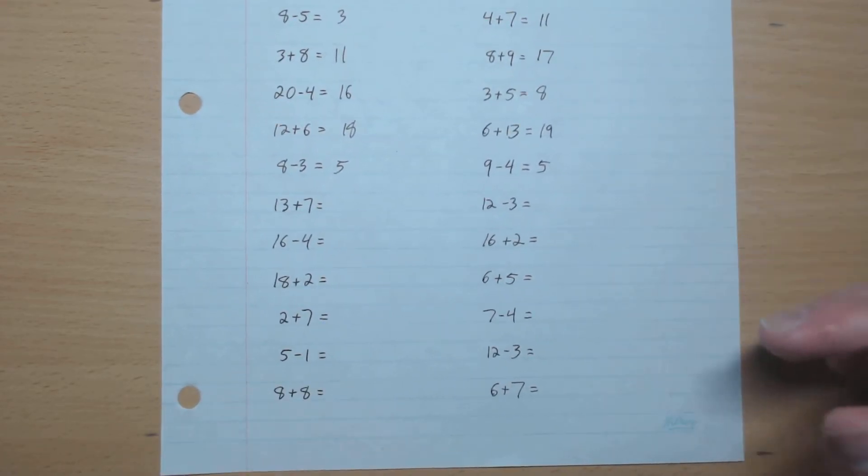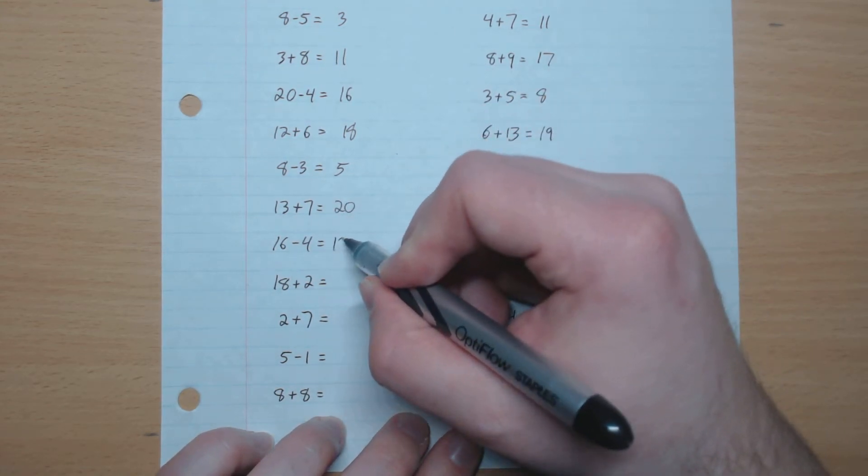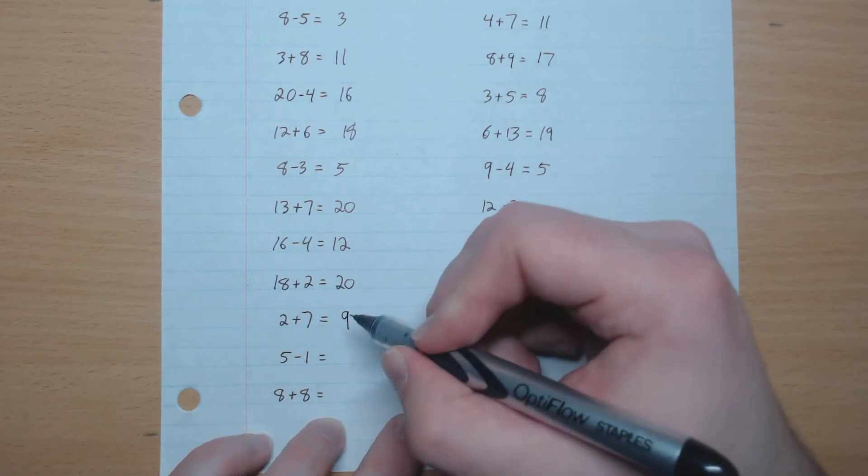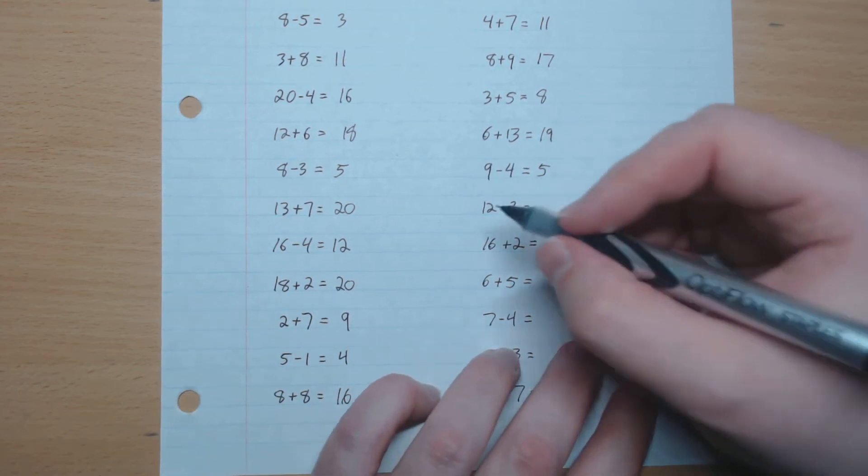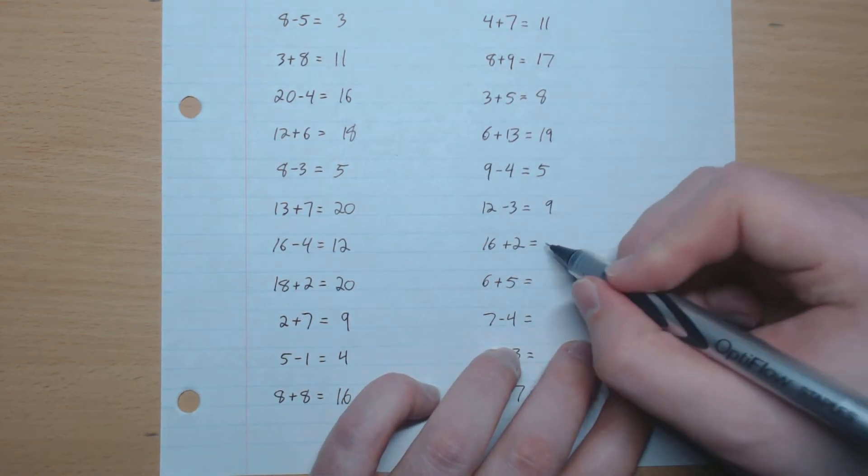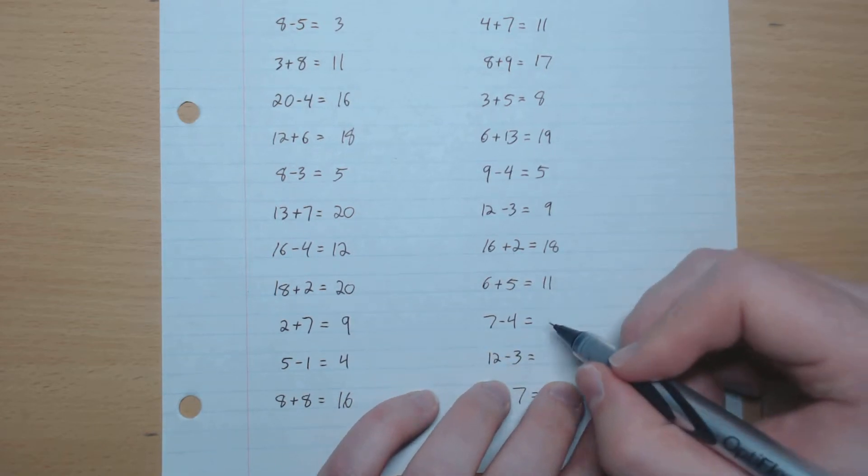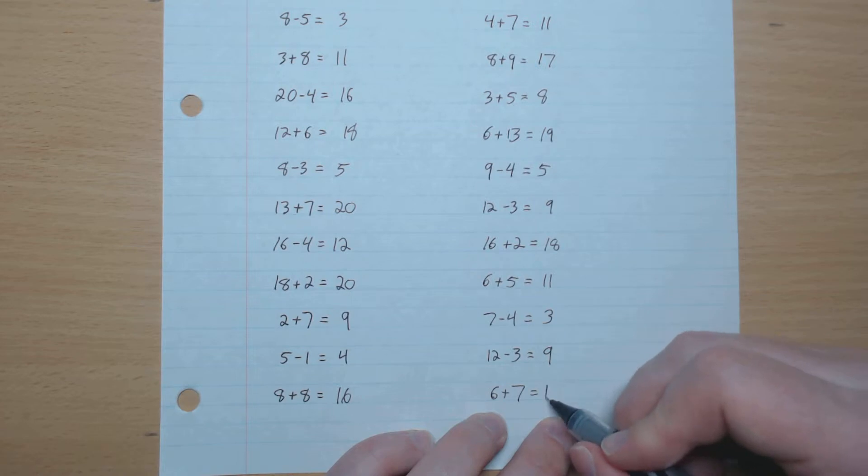Now let's do the bottom half: 20, 12, 20, 9, 4, 16, 9, 18, 11, 3, 9, and 13.